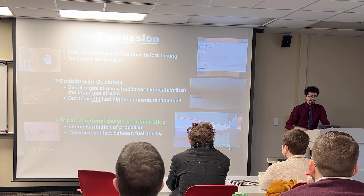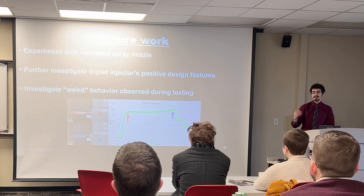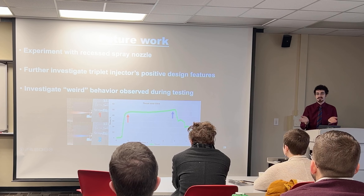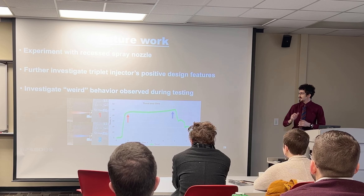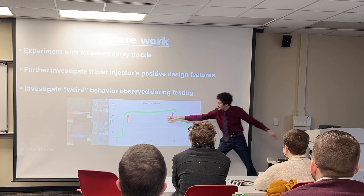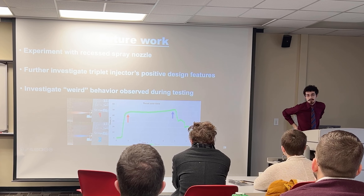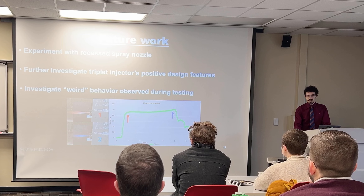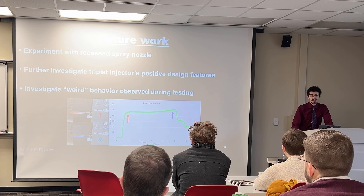As for future work, I want to try recessing the spray nozzle further back in the combustion chamber, because I think it could work much better if it actually hits the oxygen streams before reaching the combustion chamber wall. I also noticed some strange behavior during testing — a lot of tests had a steady operating phase and then a gradual spike at the end, which coincided with a change in the color of the exhaust plume. I know that ethanol is supposed to burn blue when burning at a properly oxidized ratio, so I'm wondering if there's some shifting in the mixture ratios that I hadn't anticipated, or something else going on. That's a topic for future research.